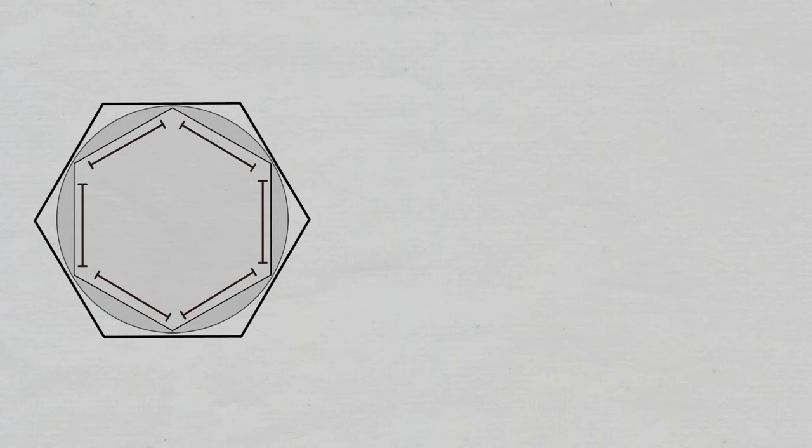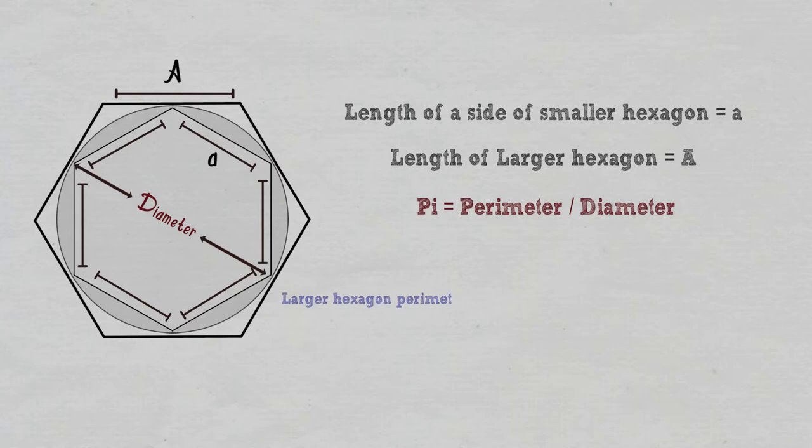Archimedes had a clever and creative way of approximating pi's value. He inscribed a hexagon inside a circle and also circumscribed another hexagon outside the same circle. He then calculated perimeters and diameters for both these hexagons, leading to an upper and lower bound for pi.